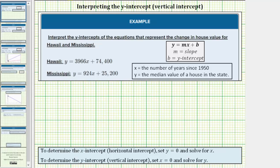For the equation for Hawaii, the y-intercept is 74,400. For Mississippi, the y-intercept is 25,200.